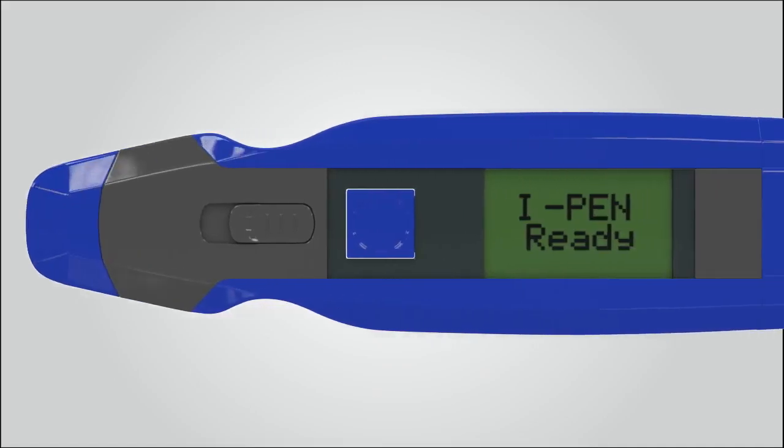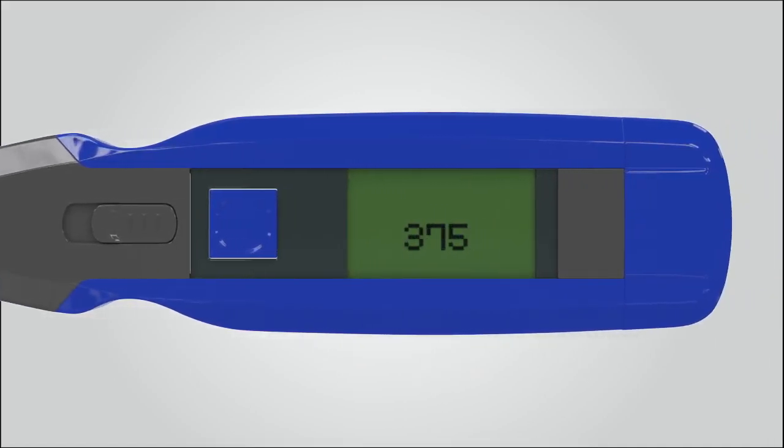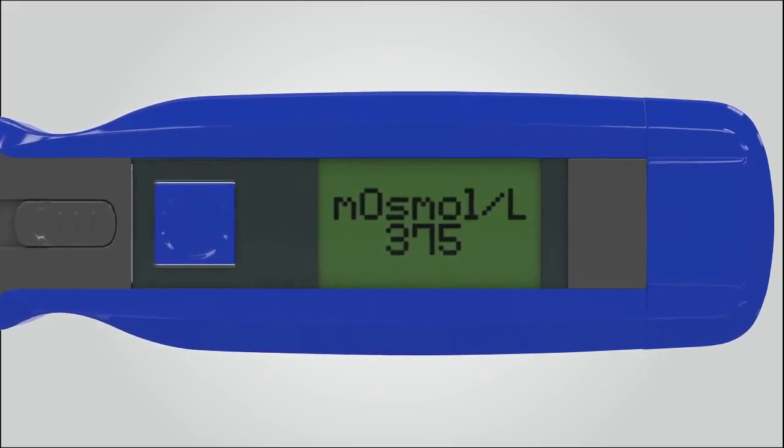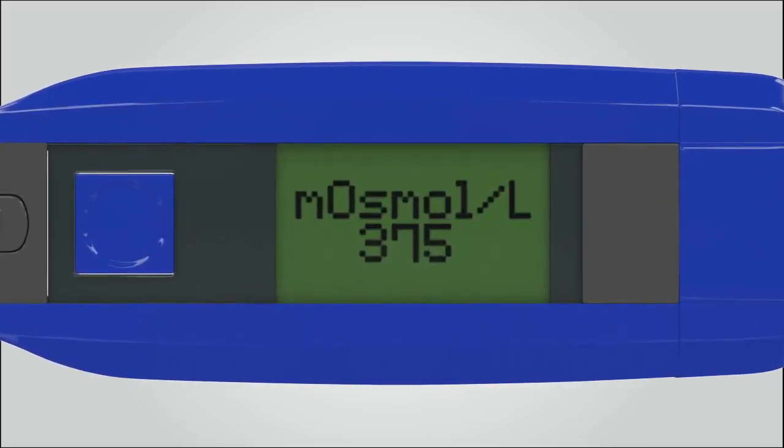The readings typically range from 275 to 375 milliosmoles per liter. These readings help eye care professionals diagnose and target treatment for ocular surface disorders that affect tear electrolyte concentrations.